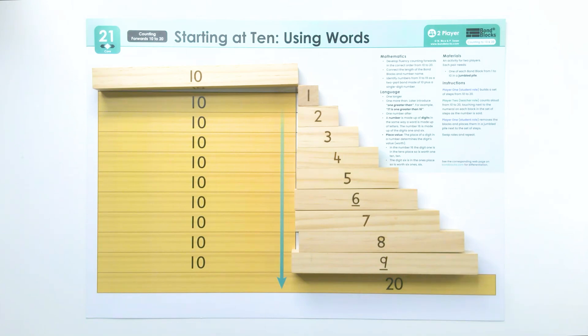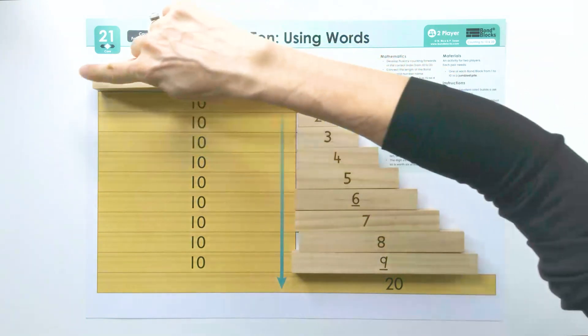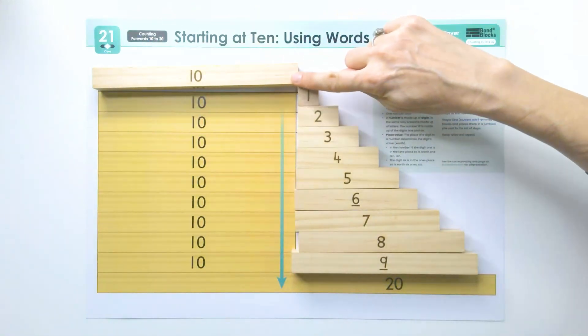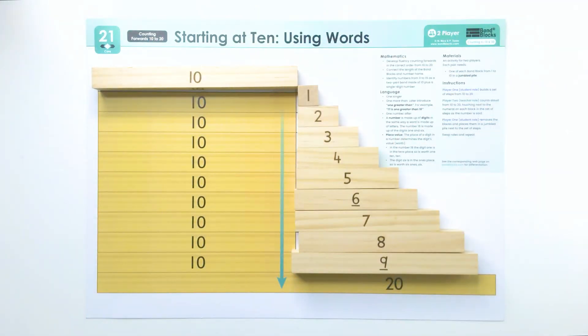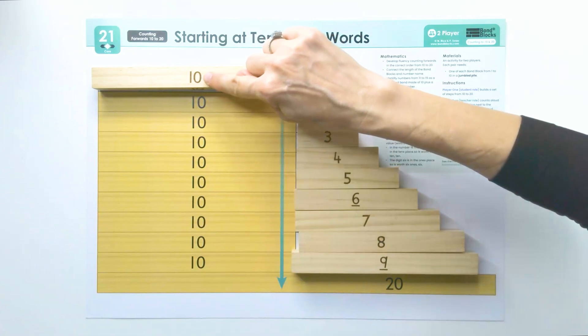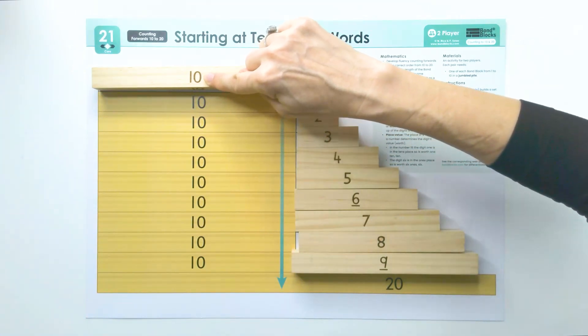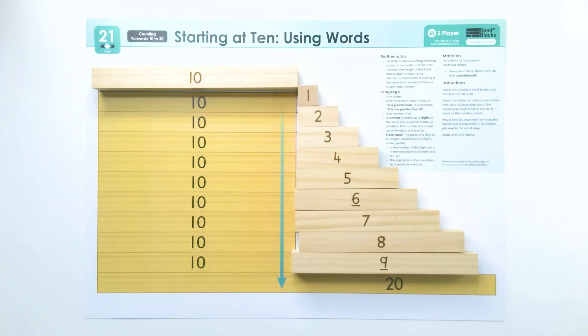When we count with bond blocks, it's different to cubes. When we use the cubes, we run our finger along the whole block. When we just use bond blocks, we point next to the numeral written on the block. So I'll go first.